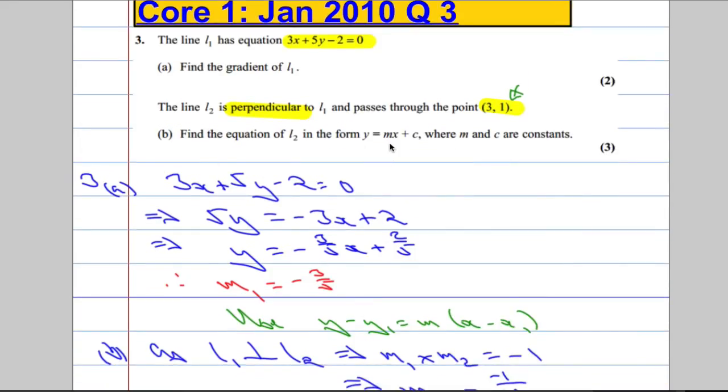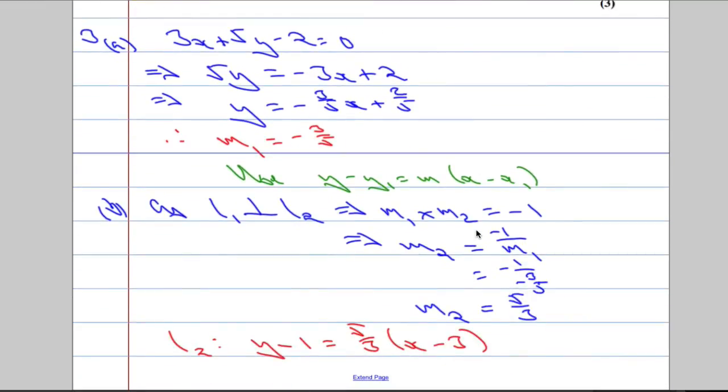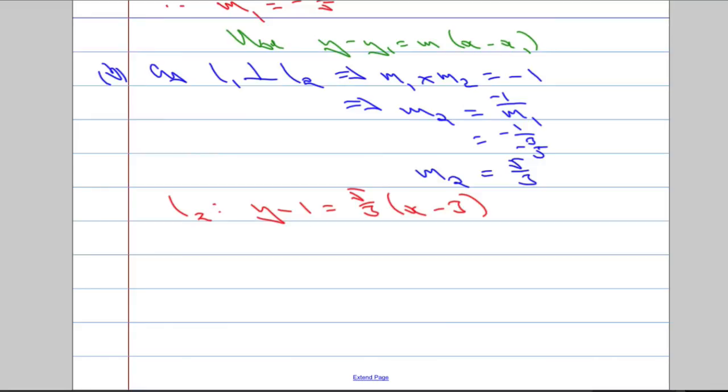And now I need to write it in the form y equals mx plus c, where m and c are constants. So essentially, I'm just going to expand this out. So y minus 1 is going to equal 5 over 3x. And then when I do 5 over 3 times negative 3, we're going to get negative 5.